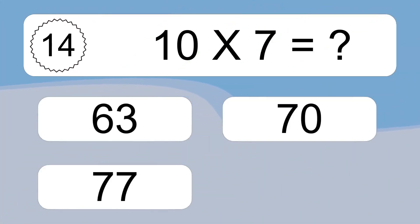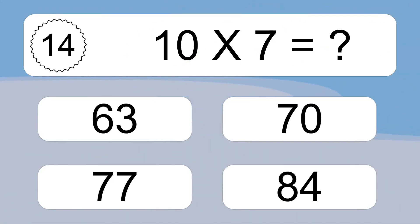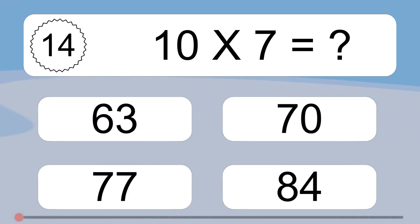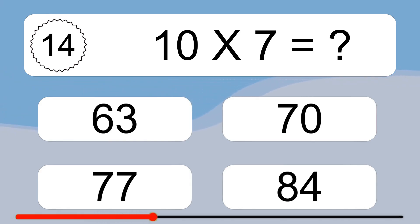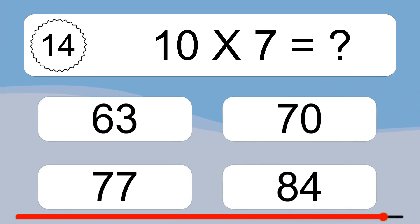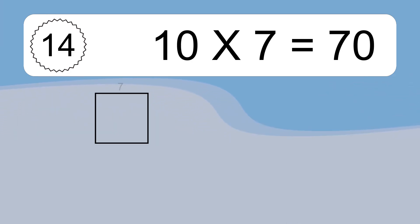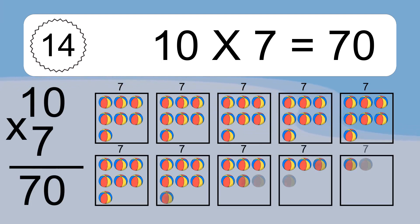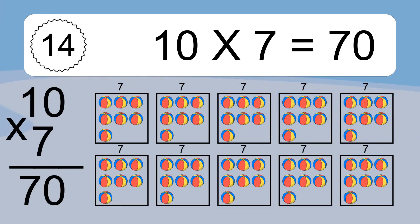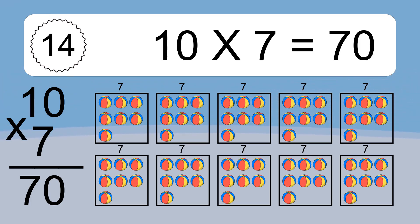10 times 7 equals what? 10 times 7 equals 70. We have 10 boxes, and each box has 7 colorful balls inside. If you count all the balls in all the boxes together, you will have 10 times 7 balls. This equals 70 balls.